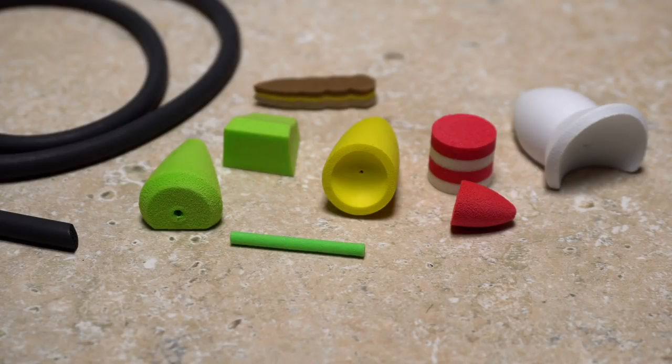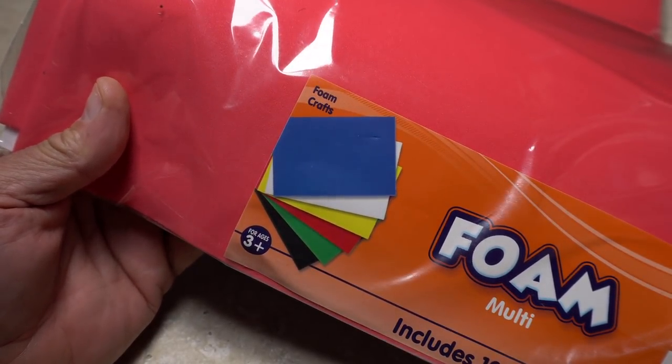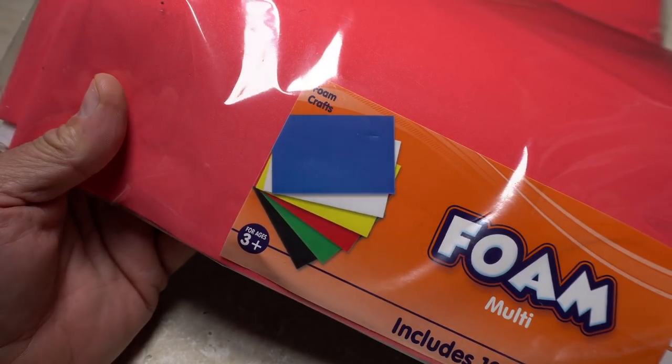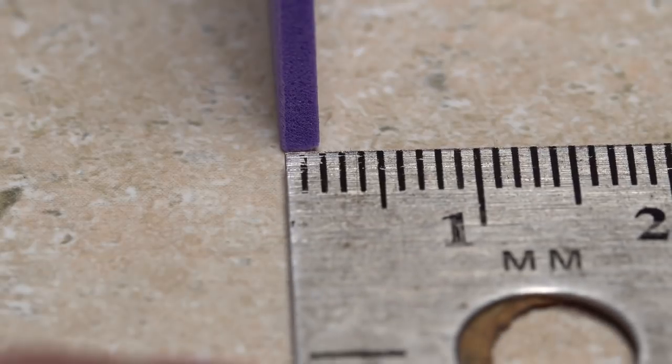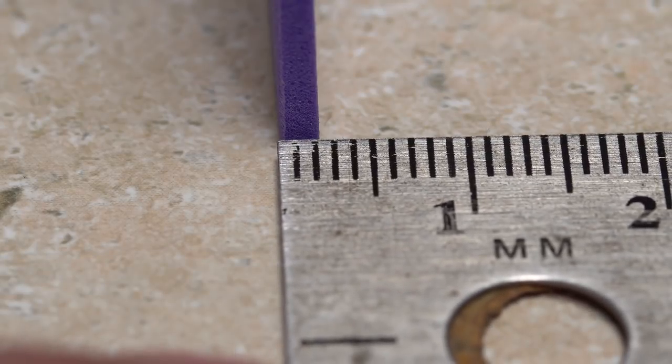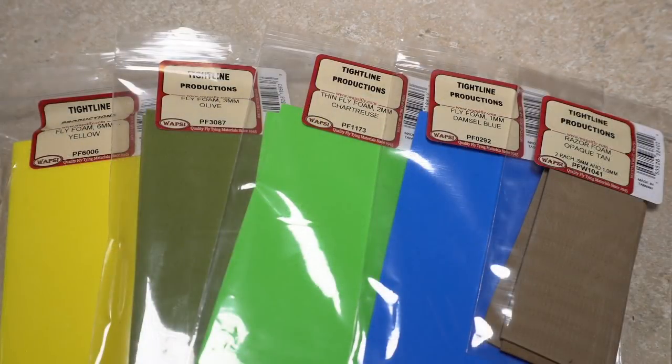Let's talk about plain old sheet foam that's available just about everywhere, from big box and grocery stores to your local fly shop. Most of these fairly large sheets are two millimeters thick and come in every color of the rainbow and then some.